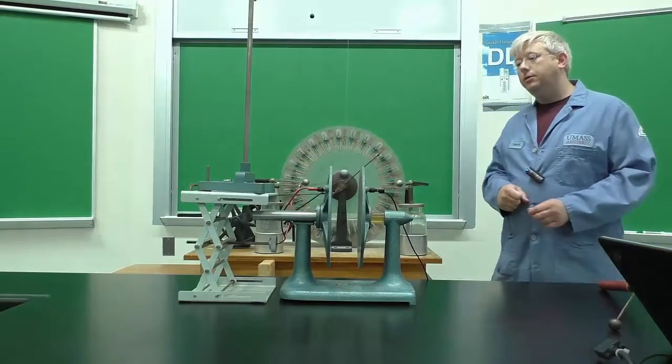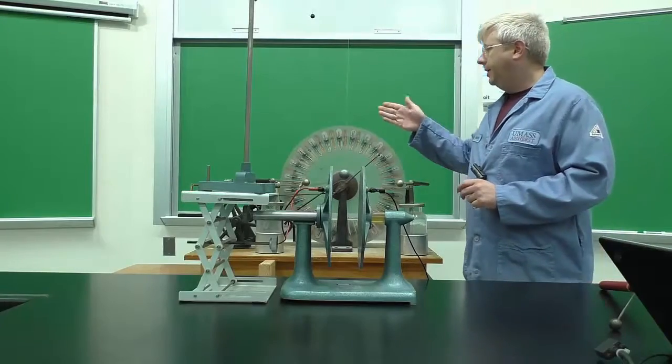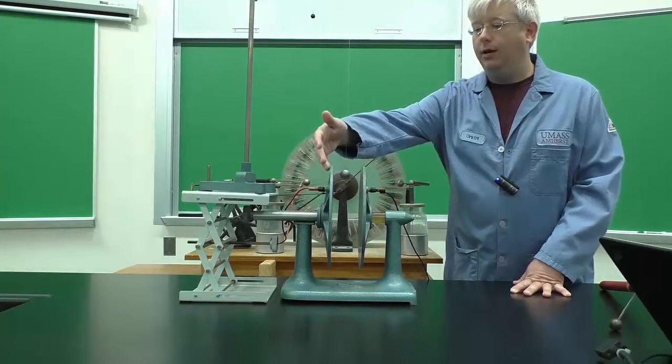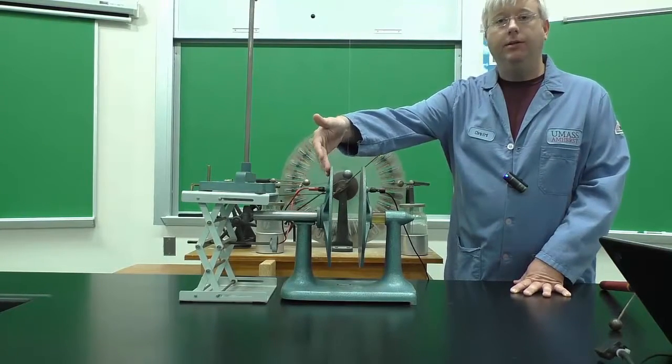Basically what we're going to do is simulate a lightning rod getting hit by lightning with the Wimshurst machine, and that's connected to a plate here, or in the case of Franklin and Gordon, it was a bell.